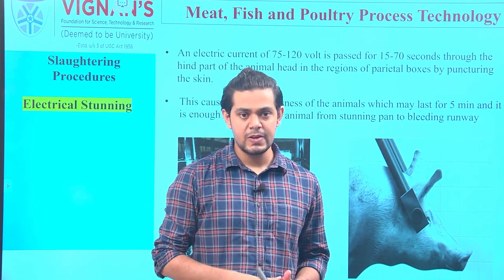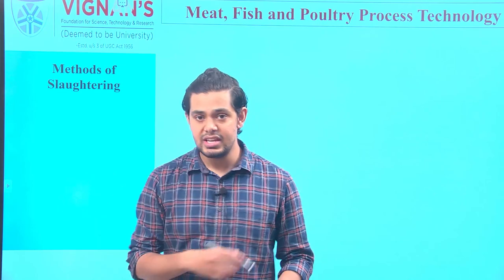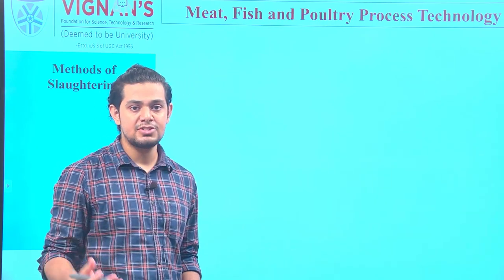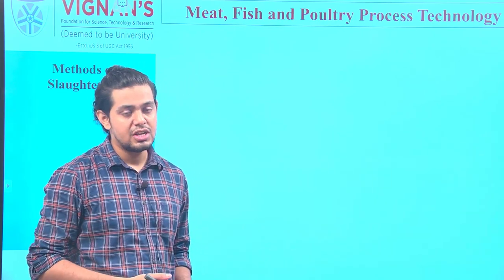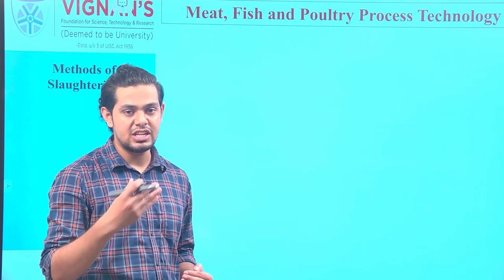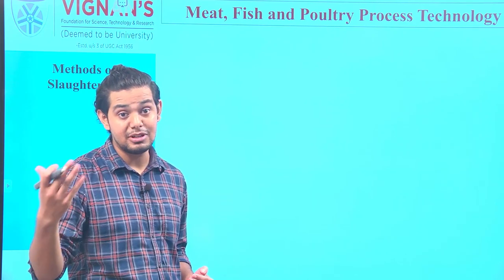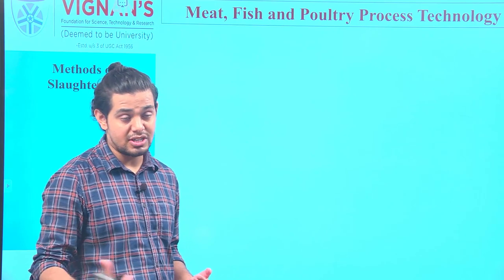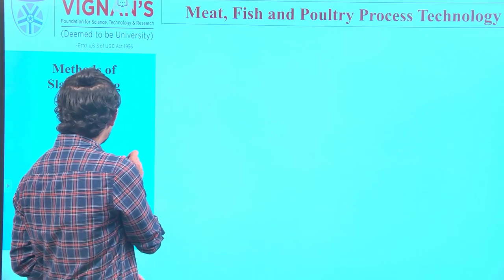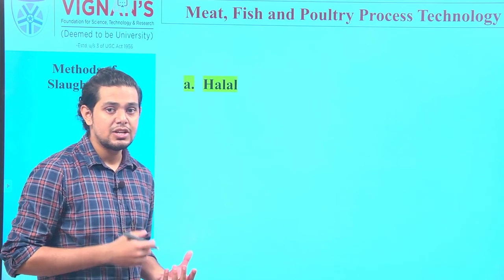After performing the stunning technique, the next process employed is slaughtering. As far as religious sacrifice or religious practices are concerned, there are specific methods by which the animal will be slaughtered. Let us have an understanding of the religious methods of slaughtering.